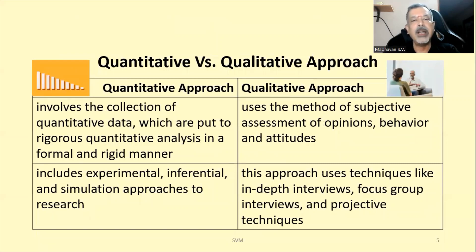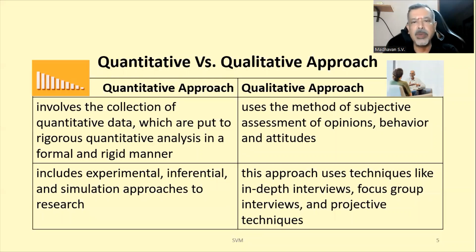There is also a difference between quantitative and qualitative approaches. Quantitative deals with numbers; qualitative does not — that is the main difference. Quantitative approach involves collection of data and its analysis in a rigid manner. Qualitative approach uses subjective assessment and is mainly used in social research — assessing opinions, behavior, and attitudes. Quantitative uses experimental, inferential, and simulation approaches, while qualitative uses techniques like in-depth interviews, focus group discussions, and projective techniques.